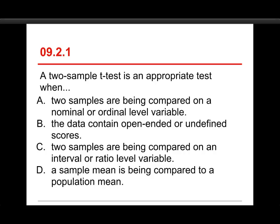The first question is: a two-sample t-test is an appropriate test when (a) two samples are being compared on a nominal or ordinal level variable, (b) the data contain open-ended or undefined scores, (c) the two samples are being compared on an interval or ratio level variable, or (d) a sample mean is being compared to a population mean. The correct answer is C — it's appropriate when two samples are being compared on an interval or ratio level variable.